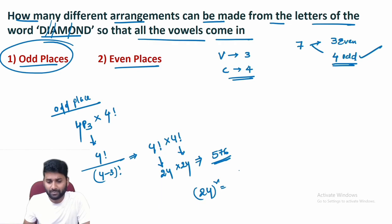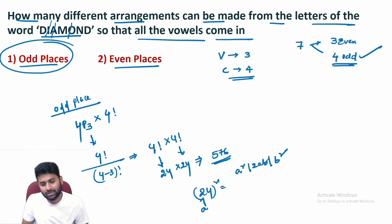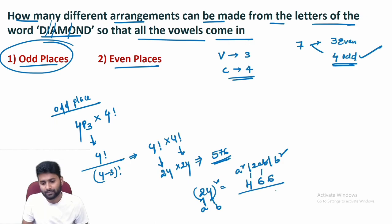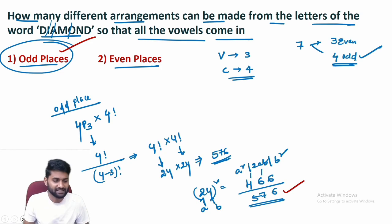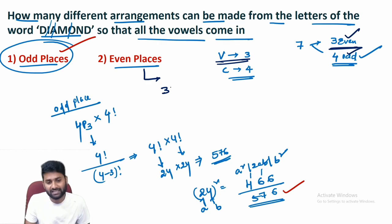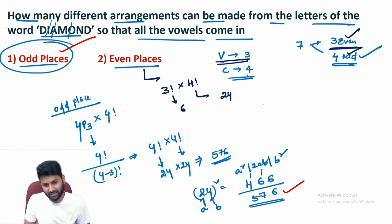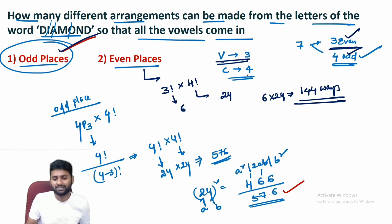Let me verify using the square approach: (a+b)² = a² + 2ab + b², where a=2, b=3 — actually 24 × 24 = 576. So if vowels are in odd places, total ways = 576. For even places: there are three even places and three vowels, so 3! arrangements, and four consonants in remaining four odd places = 4!. Total = 3! × 4! = 6 × 24 = 144.